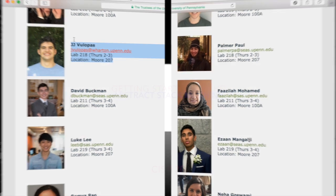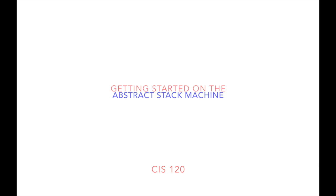Hey everybody, it's JJ Villopes. I am a sophomore and I'm a TA for 120. We're going to be looking at the abstract stack machine, its implications and relationships with what we've been learning in the class so far and how you can use it as a simplification model throughout the class and on exams.